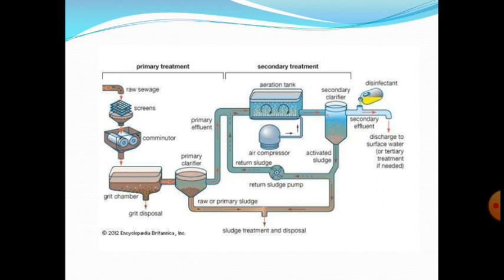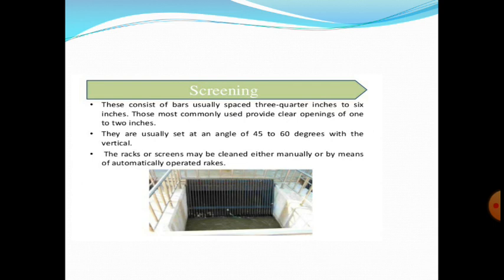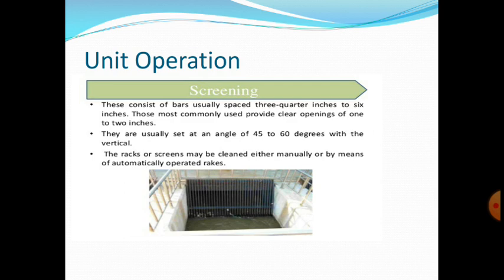In primary treatment, the sewage enters the screens, where big particles are removed. Screening is a unit operation done to remove large suspended and floating solids from wastewater, in order to protect pumps, pipes, and walls from clogging and damage. Examples include rags and pieces of cloth from cotton textile waste, fine fibers from woolen mills, spent tan bark from vegetable tanning processes.